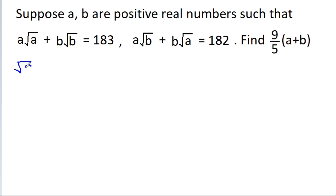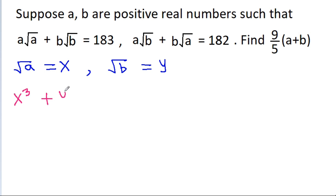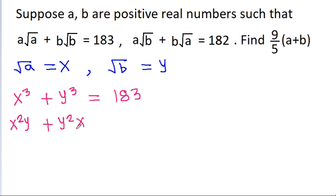If we take root a as x and root b as y, then the first equation a root a will become x cubed plus b root b will be y cubed, that is equal to 183. The second equation a root b will be x squared y plus b root a will be y squared x, that is equal to 182. And we have to find the value of 9 by 5 times a plus b, where a will be x squared and b will be y squared.